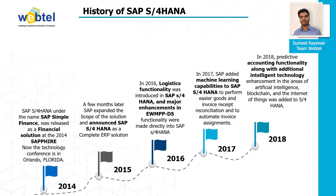This is the history of SAP S4 HANA. SAP S4 HANA was released as a financial solution in 2014 at a technology conference in Orlando, Florida. A few months later, SAP expanded the scope of the solution and announced SAP S4 HANA as a complete ERP solution.